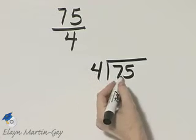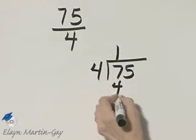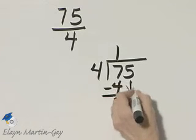How many times does 4 go into 7? That's one time. 1 times 4 is 4, and if I subtract, I have 3.